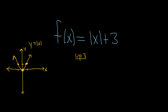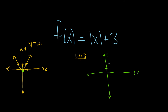So let's carefully draw it over here. We have the y-axis and the x-axis. We're starting at a point and going up 3, so it goes up 3. Then you just draw the V — you go up 3 and then you start it there.